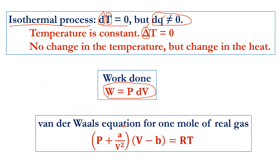Now let us go to the Van der Waals equation for real gas. We discussed the gas equation for ideal gas; now this is the Van der Waals gas equation for real gas. You know the difference: in an ideal gas there is no attraction or repulsion between molecules, whereas in a real gas there is significant attraction or repulsion between gas molecules. Based on that, the Van der Waals equation is written as: (p + a/V²)(V − b) = RT.